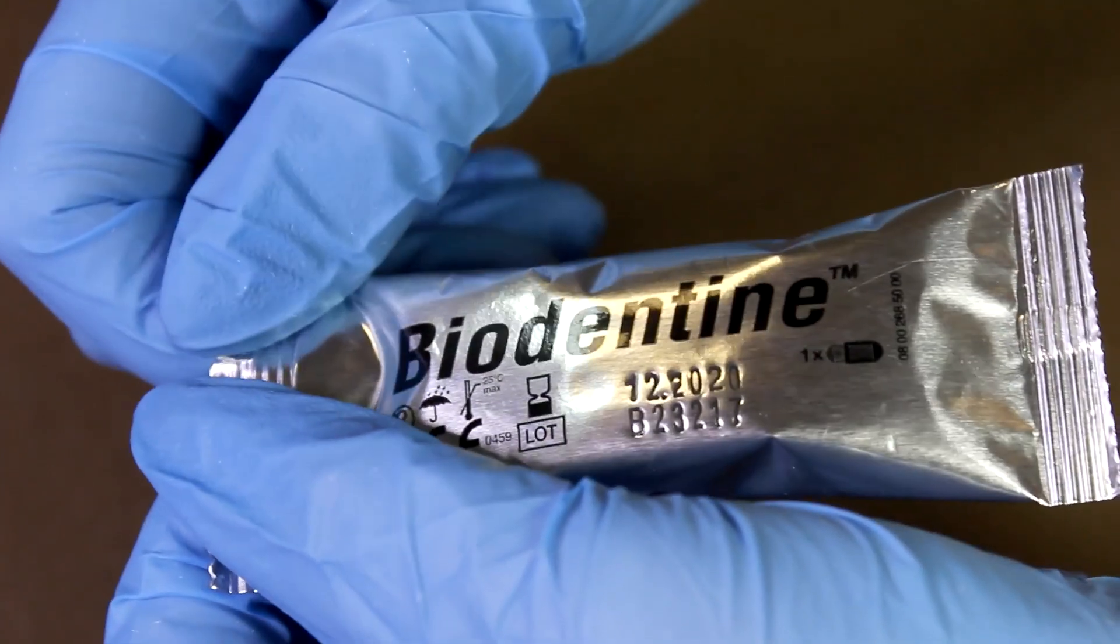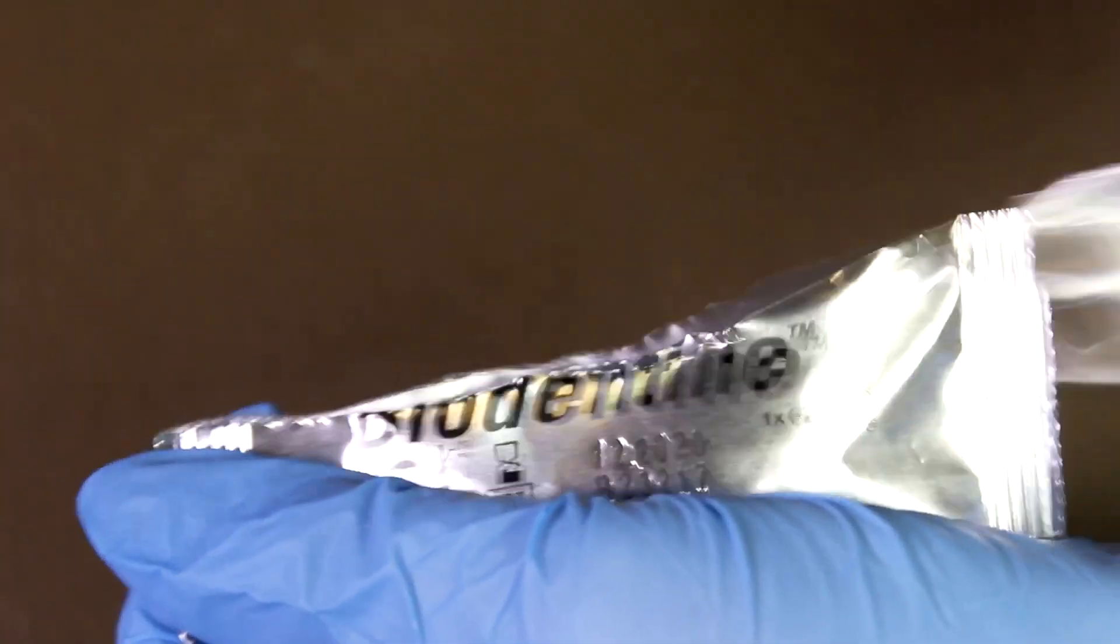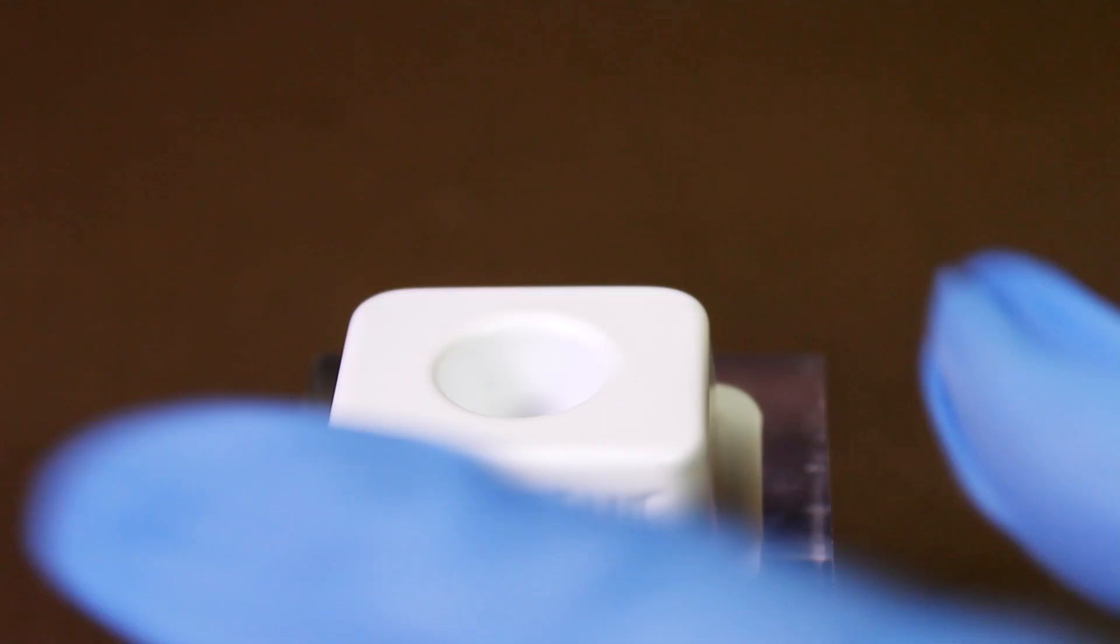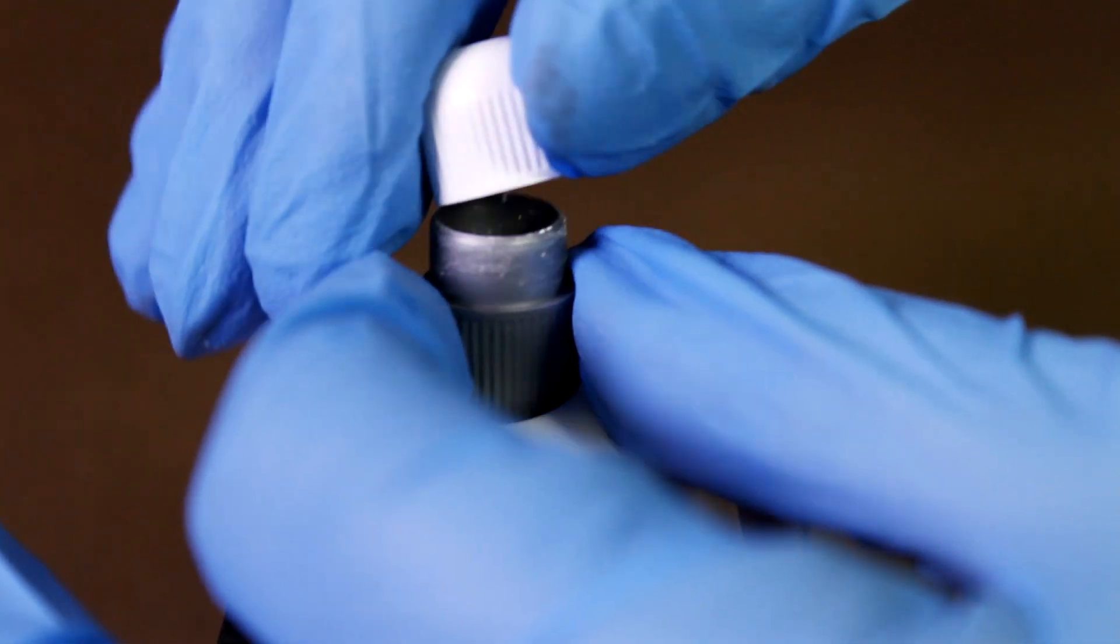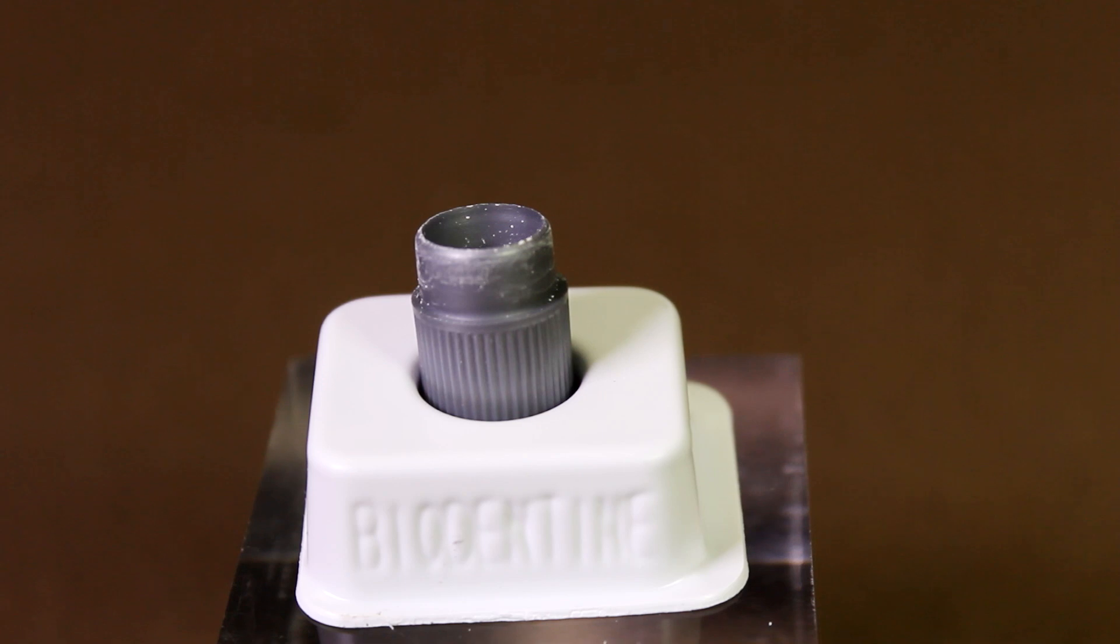Tear open a foil-wrapped Biodentine capsule. Keeping the capsule upright, remove the white cap and place the open capsule into the stand.